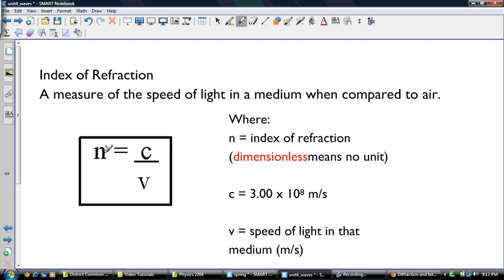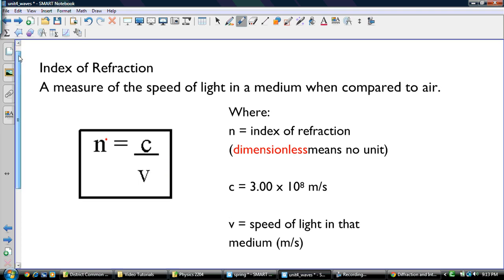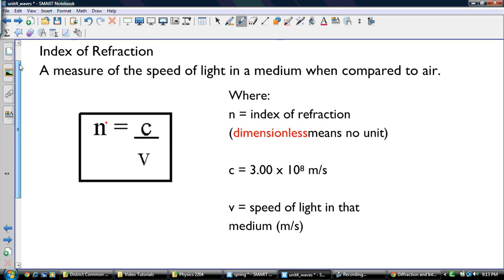Here's the index of refraction. So N is equal to C over V. So the index of refraction is dimensionless. It doesn't have any units. C is the speed of light, 3 times 10^8 meters per second. And V is the speed of light in that medium. So that's one of the things we talked about that you might need to know. It's just a ratio of the speed of light and the speed of light in that medium.